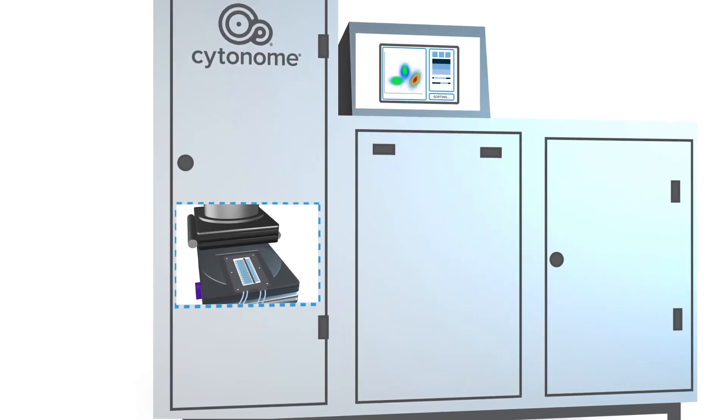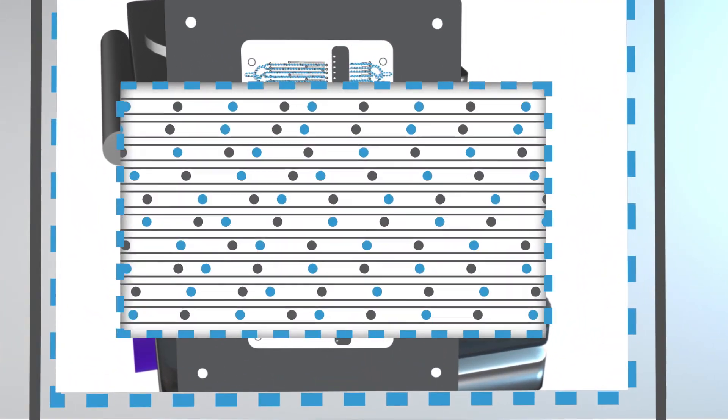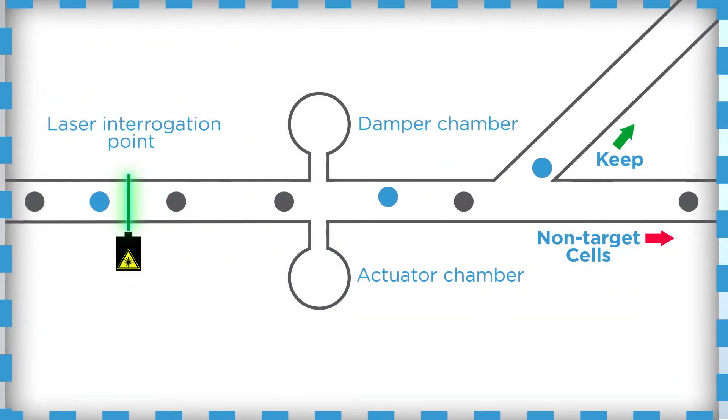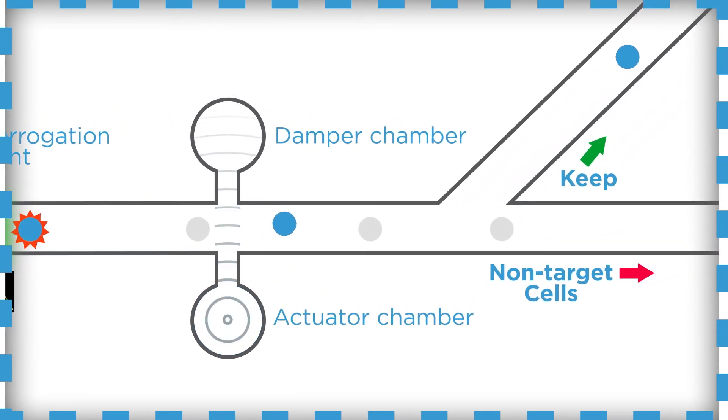High purity cell populations are a critical requirement for the successful manufacture of many cell therapies. In each microsorter channel, cells pass the laser interrogation point and then the target cells are selected with a gentle push that directs them into the keep with the rest of the sorted cell sample, while non-target cells are segregated and collected.